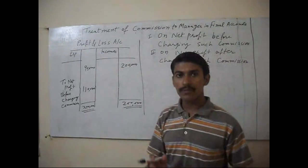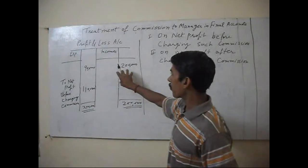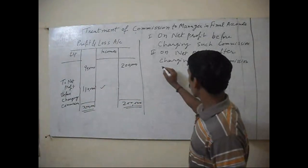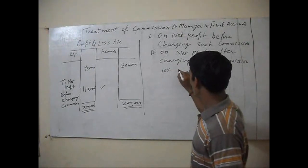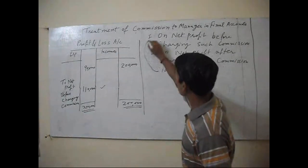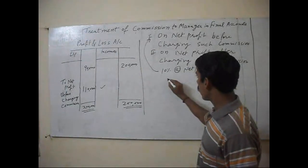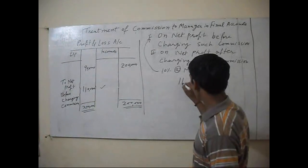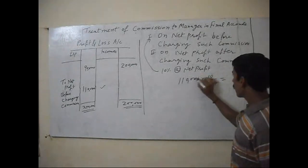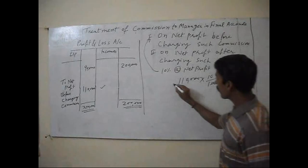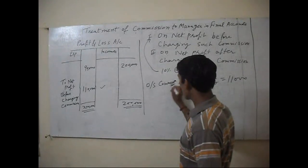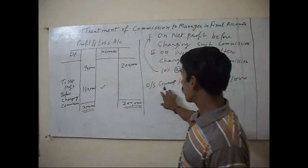In the first case, we will calculate by making a profit and loss account, and this is our net profit before charging commission. Suppose the rate of commission is 10% of net profit before charging commission. Then one lakh ten thousand is our profit, and ten percent of that is eleven thousand. This is outstanding commission because we have not yet paid the commission to the manager.